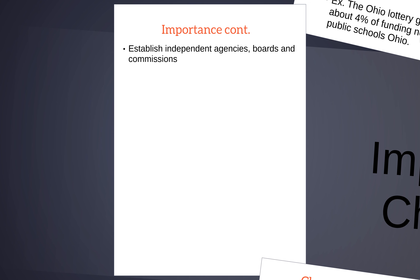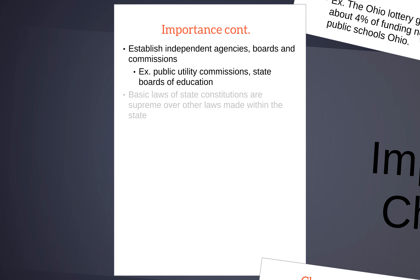State constitutions also establish independent agencies, boards, and commissions. These give us regulations for employment — for example, 16 and 17 year olds are not allowed to work past 11 p.m. on school nights or midnight on weekends, and can't work more than 40 hours. These ensure things stay fair for everybody. Agencies would also include the Ohio State Troopers, tasked with enforcing the state's driving laws on interstates. Other examples include public utility commissions for water and electric, and state boards of education, which determine educational policies and what students are required to learn.